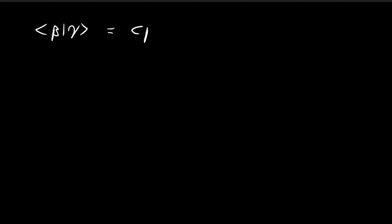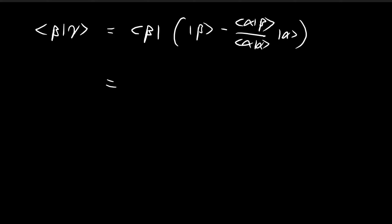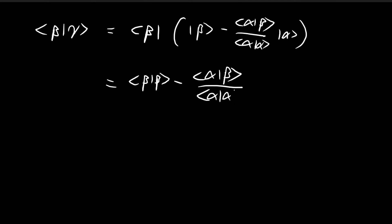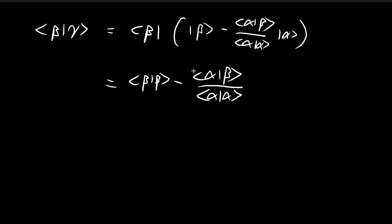Now let's start with the inner product of beta with gamma. I'm going to substitute the expression for gamma inside the inner product. Then using the third rule, this gives us the inner product of beta with beta, minus the inner product of alpha with beta divided by the inner product of alpha with alpha, times the inner product of beta with alpha. By the first rule, the inner product of beta with alpha is just equal to the conjugate of the inner product of alpha with beta. So we have the inner product of alpha with beta times its own conjugate, which gives the absolute value squared. The entire inner product of beta with gamma is therefore entirely real — there are no imaginary components.